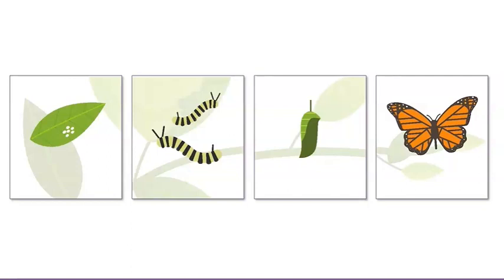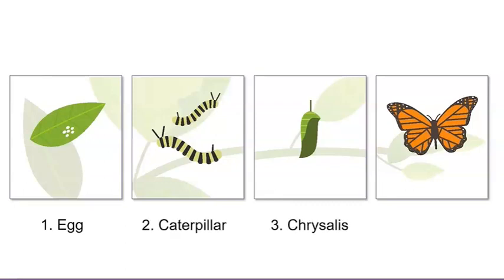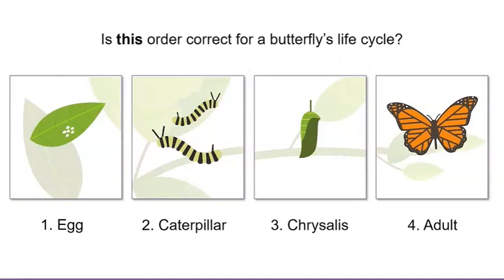Let's look at the stages one more time. Is this order correct for a butterfly's life cycle? Yes, we got it. A butterfly starts off as an egg, then grows into a caterpillar. From that stage, it forms a chrysalis, and then emerges as an adult.